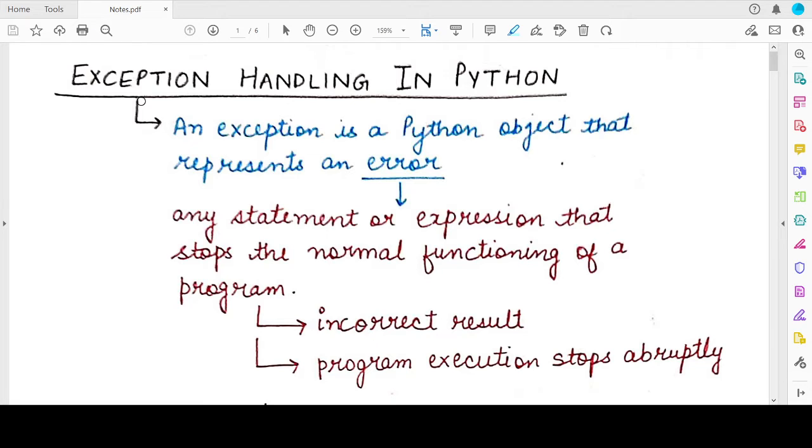So Python exceptions represent the errors that occur in a program. Now what is an error? Error can be any kind of statement or expression that stops the normal functioning of a program.